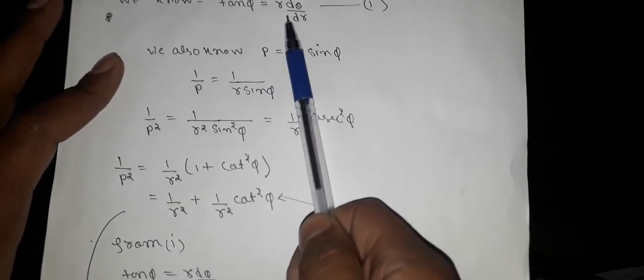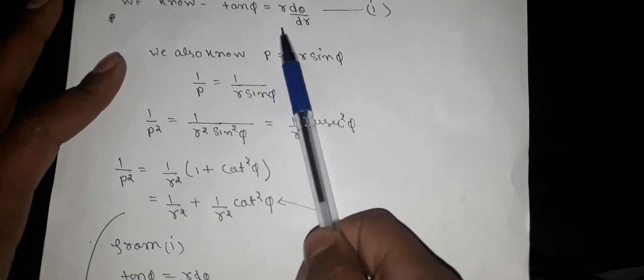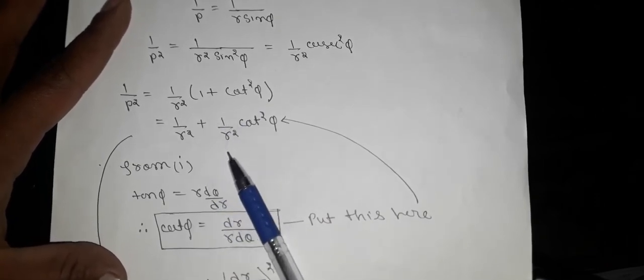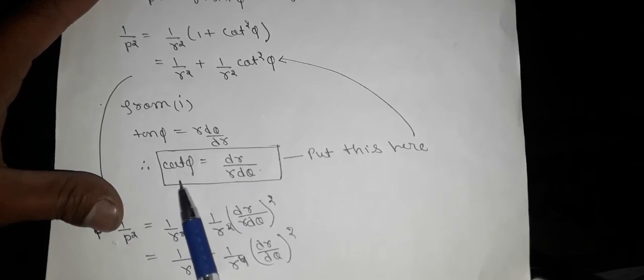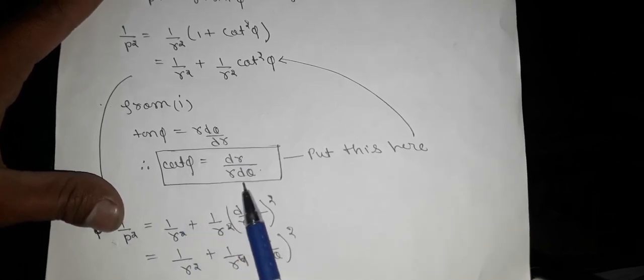tan θ is equal to r dθ/dr. cot θ is equal to dr/r dθ. So we have written 1/r dθ, 1/r², 2/r², 2/r². tan θ equals r dθ/dr, cot θ is equal to dr/r dθ.